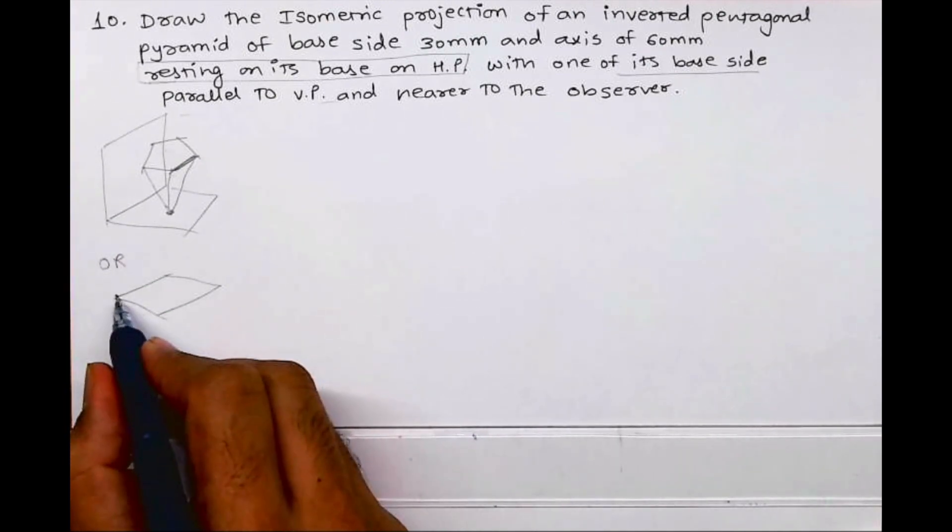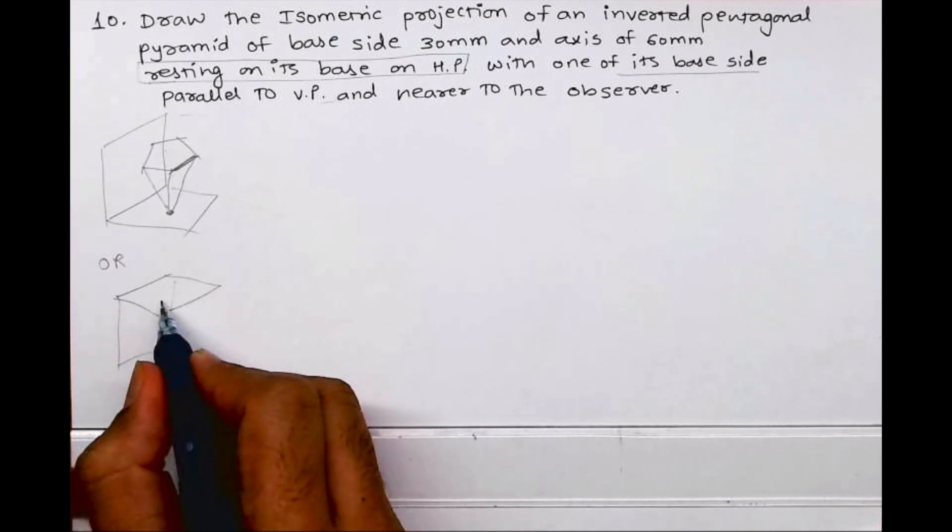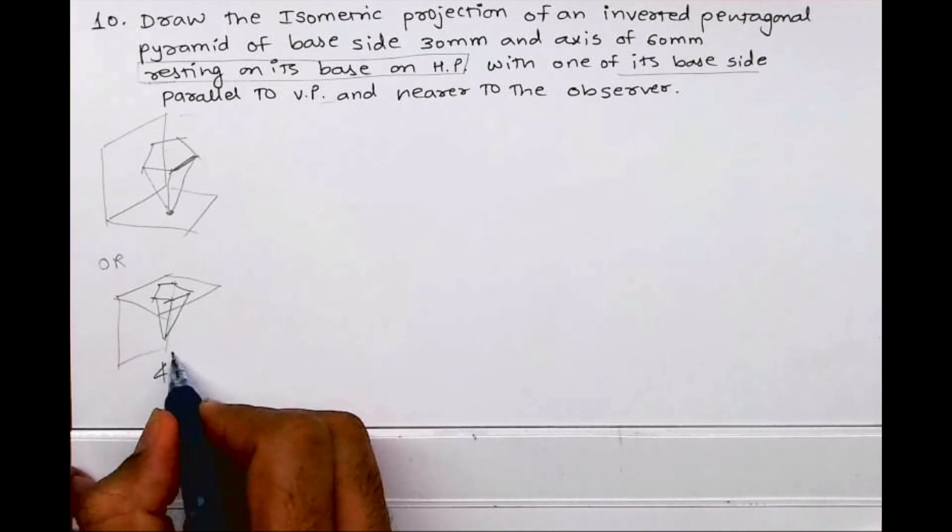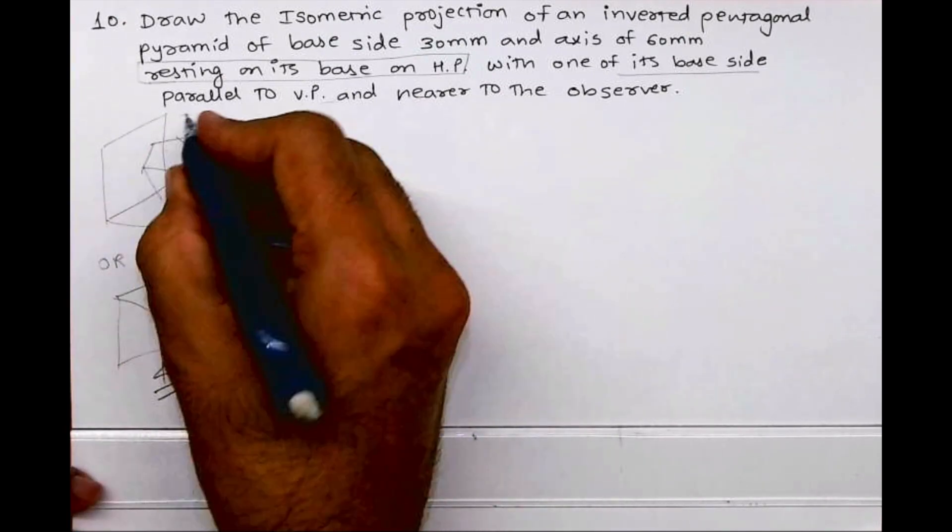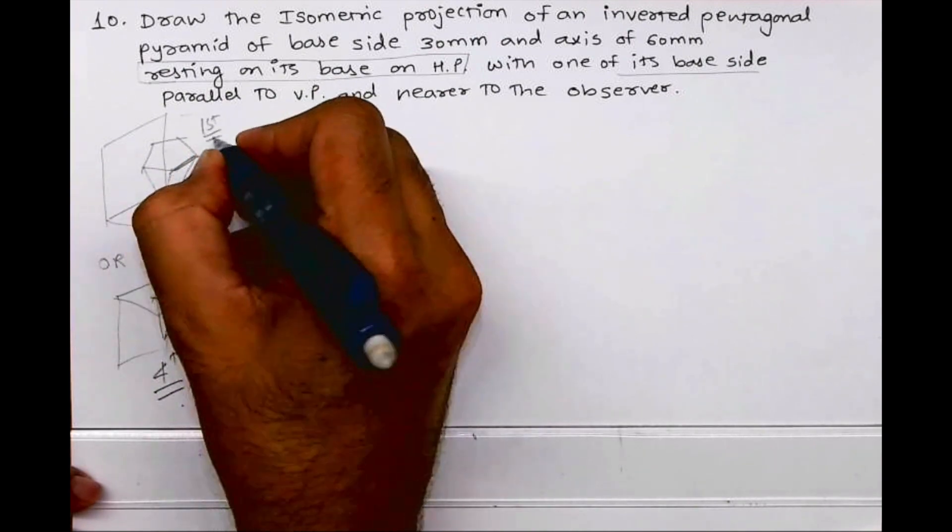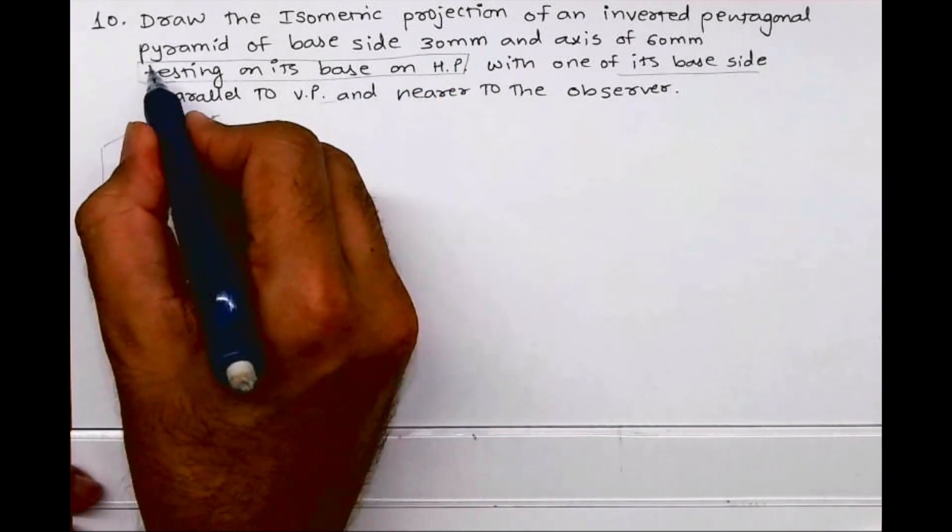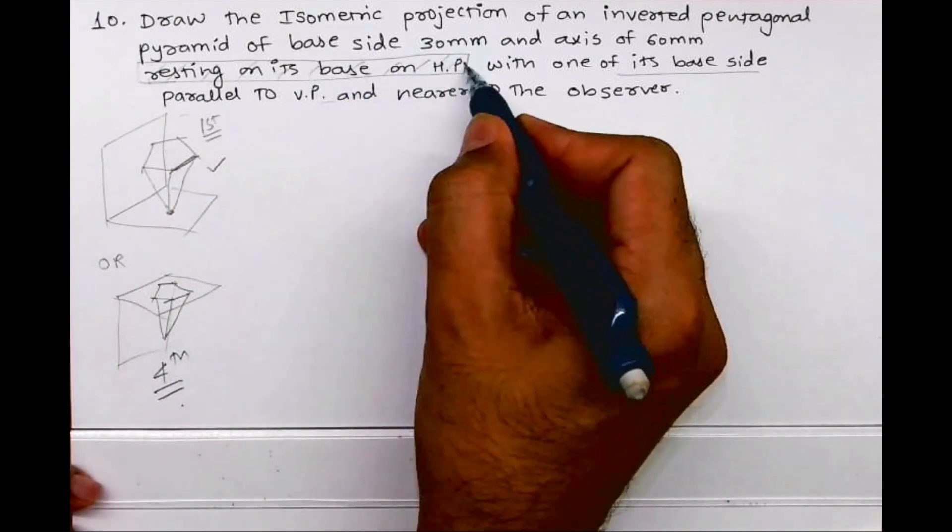Now according to the question, if I draw then it will be this way. It is resting on its base on HP, so then it will be this way. But this is fourth quadrant and in CBSE we have only first quadrant, so according to me this is the correct one.